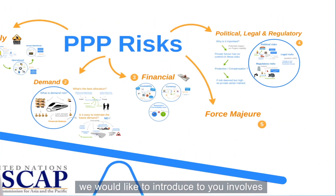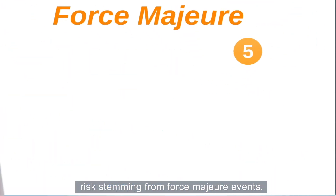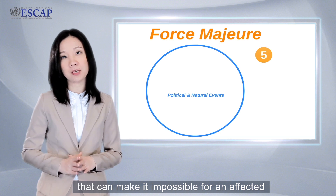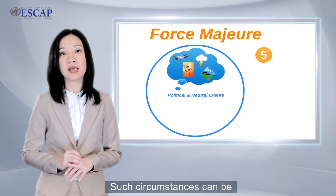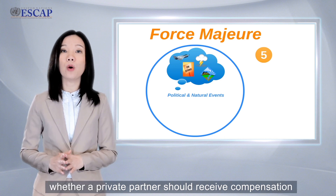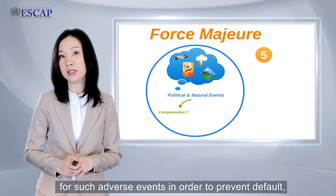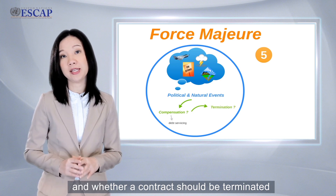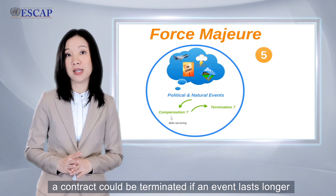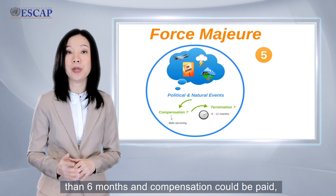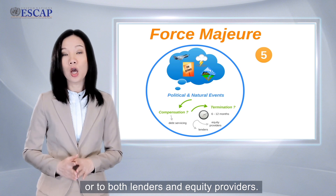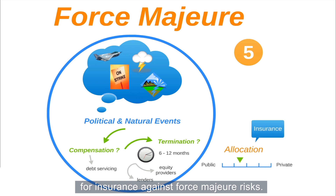The last category of risks involves force majeure events — circumstances beyond the control of contracting parties that can make it impossible for an affected party to fulfill its obligations. Such circumstances can be the consequence of natural disasters, civil wars, and so on. Key questions are whether a private partner should receive compensation for such adverse events in order to prevent default, and whether a contract should be terminated if such events are of considerable magnitude or duration. For example, a contract could be terminated if an event lasts longer than six months, and compensation could be paid — depending on contractual arrangements — either to the lender alone or to both lender and equity providers. Compensation mechanisms, however, are no substitute for insurance against force majeure.